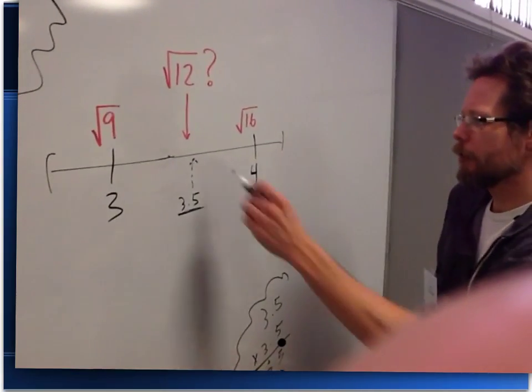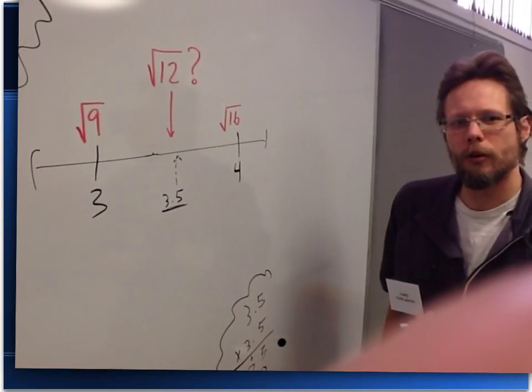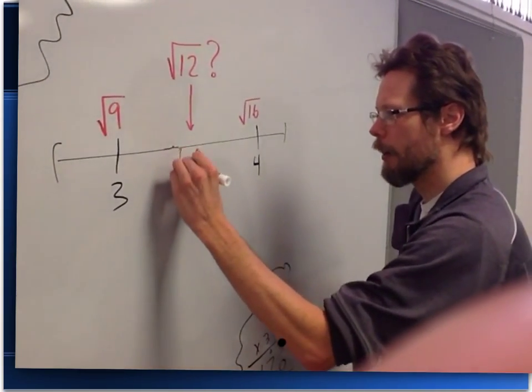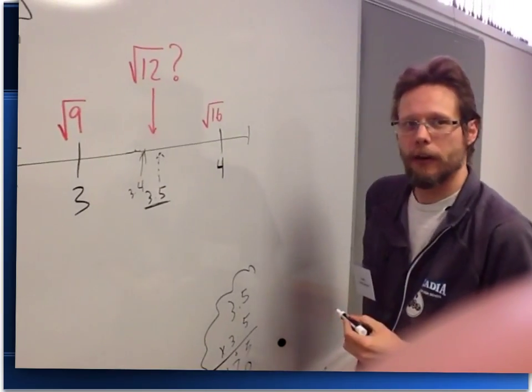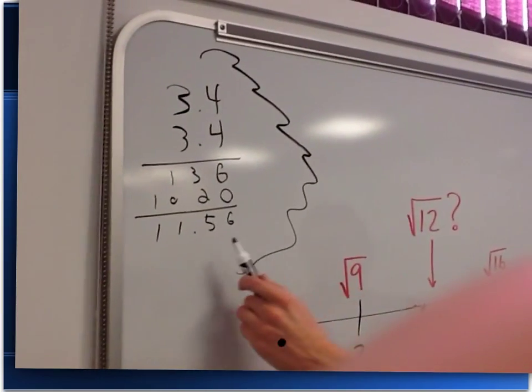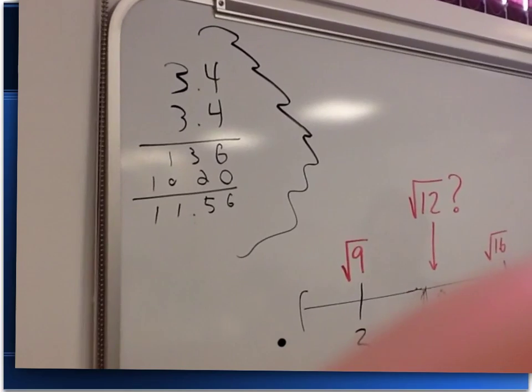So, our guess of 3.5 is a little bit too big. Let's try then, how about 3.4? We'll do a little bit of arithmetic on that, and we can see it's a little bit too small.